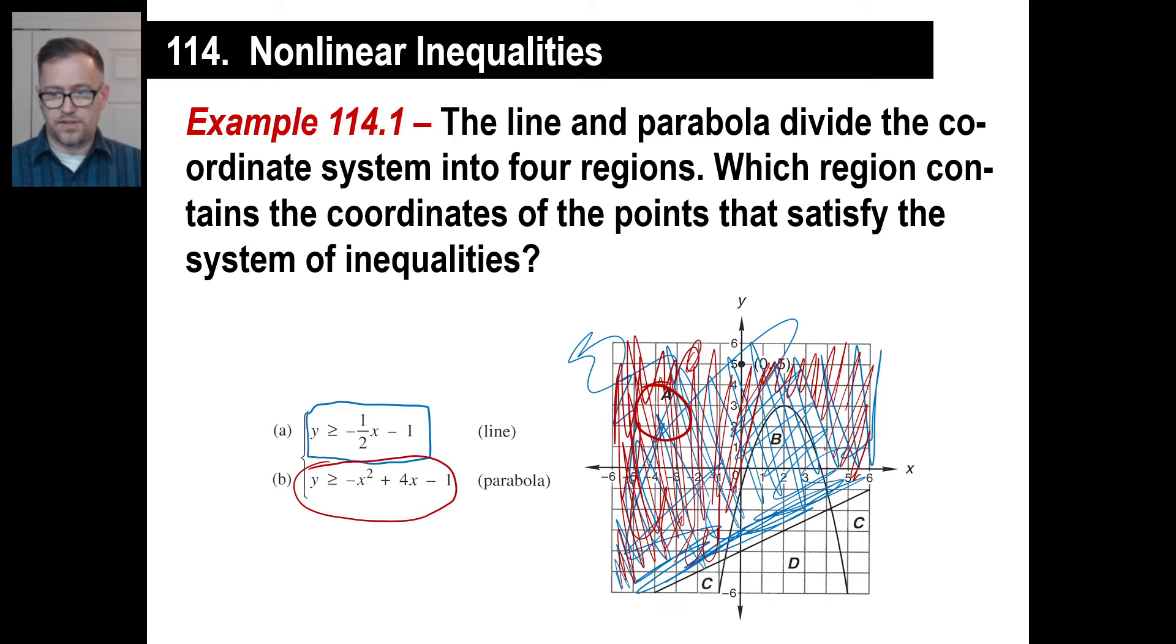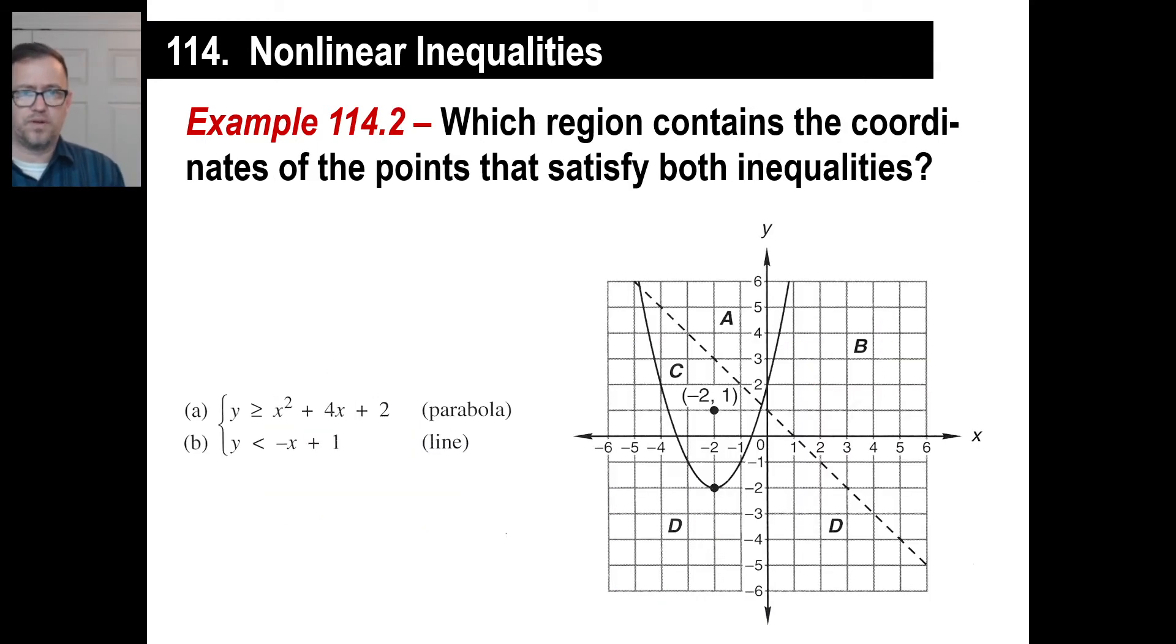Of course, the line itself satisfies A and B, but when it says both, there's only A that satisfies both of those. So it's pretty straightforward. Let's do another one.